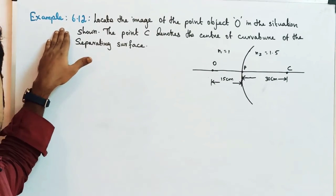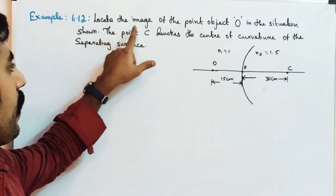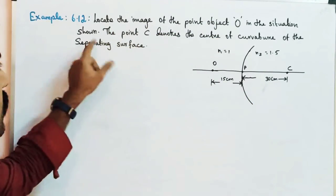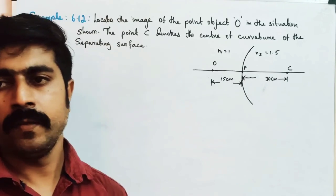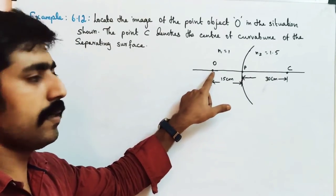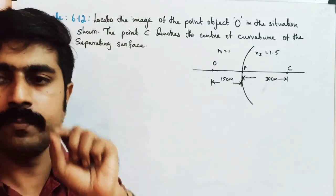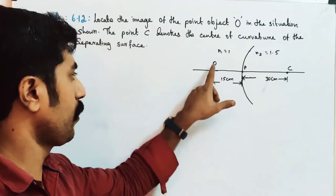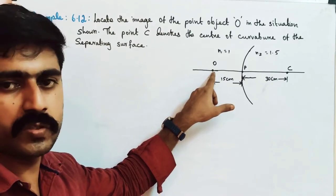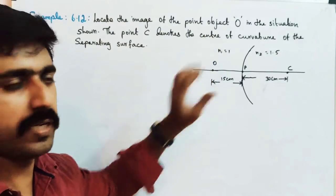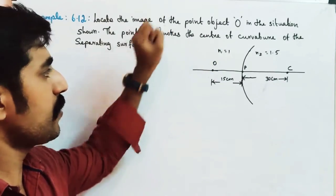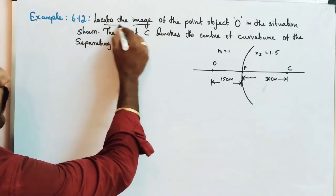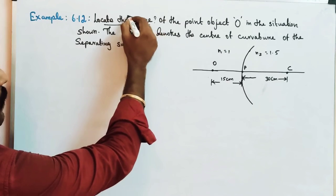Example 6.12: Locate the image of the point object O in the situation shown in the diagram. There is a point object shown in the diagram. We need to find the image distance V.